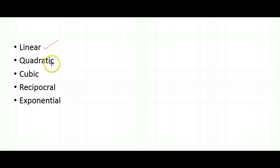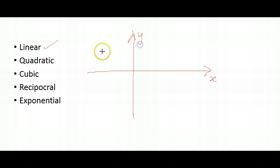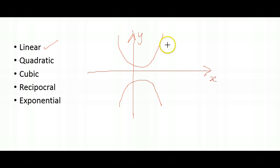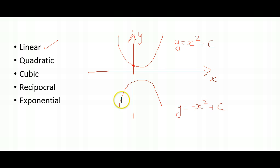Next, we have the quadratic graph. We have the y-axis and x-axis. The quadratic curve, or graph, would be a u-shape, or perhaps an n-shape. So if we have y equals to x-squared plus a constant c, it would look something like this, and c would be the y-intercept. And if we have y equals to negative x-squared plus c, it will be an n-shape curve. These are graphs which you are supposed to already know.